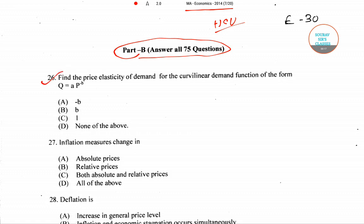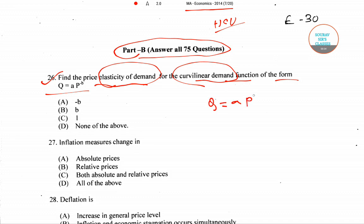Question number 26 asks us to find the price elasticity of demand for the curvilinear demand function of the form Q = A·P^(−B). We need to find the elasticity of demand for this curvilinear demand function, so first we have to differentiate this equation with respect to P.